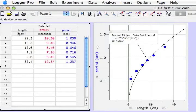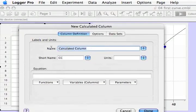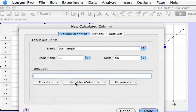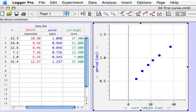We're going to create a new column for the corrected length. So I go to the Data menu, choose New Calculated Column, and I'm going to make a name like Core Length for Corrected Length. And that's going to be in centimeters, and I need to give it an equation. My equation is going to be the length plus 5 cm. When I click Done, I get a new column, the corrected length. There's the 27.5 cm. To put this on the graph, as before, I point at Length, click, and choose Corrected Length from the menu. Now, Corrected Length is plotted against period.